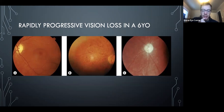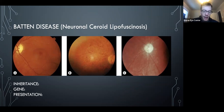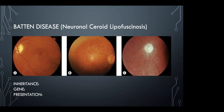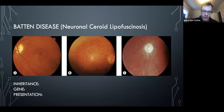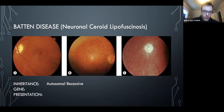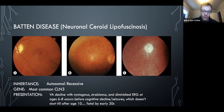Rapidly progressive vision loss, nystagmus in a six-year-old, bad ERGs — think Batten's disease (also called neuronal ceroid lipofuscinosis). The gene is CLN3. It's important because it's lethal and patients usually present first to ophthalmologists, with vision symptoms starting around age 6. They'll have profound vision loss, nystagmus, a bad ERG, and then develop seizures, cognitive decline, and death by the early 20s.